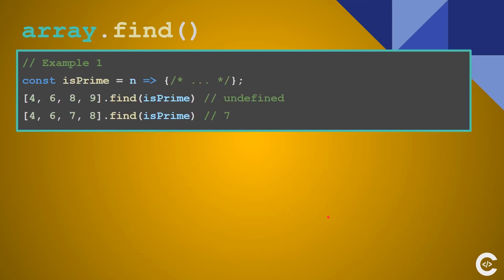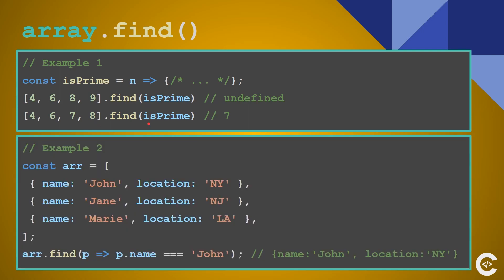find is also a really common method. It finds an element and returns it. If the element wasn't found it returns undefined. If we have a callback isPrime that checks whether the element is prime — on the first execution it returns undefined, but on the second it returns 7. You can also use it to find an element with a name of John in an array of objects, and it will return that object.